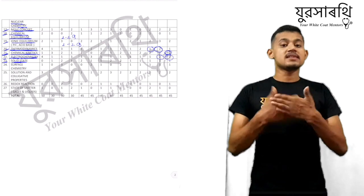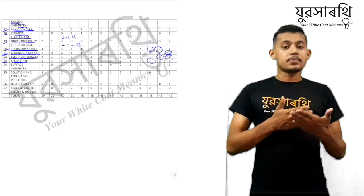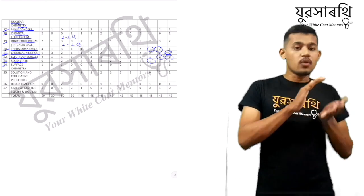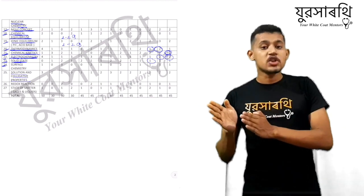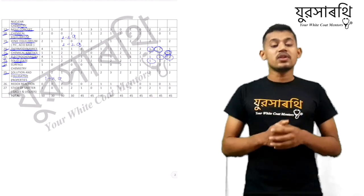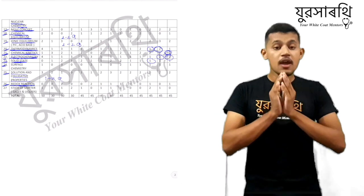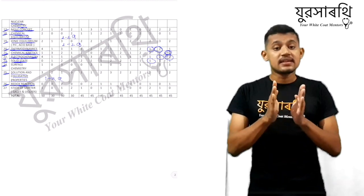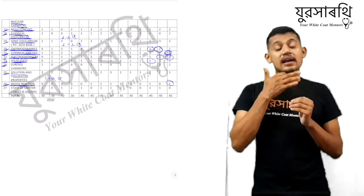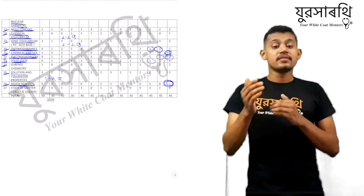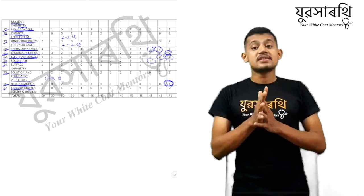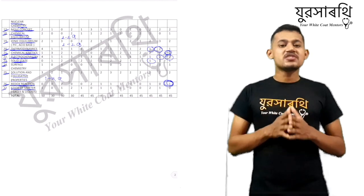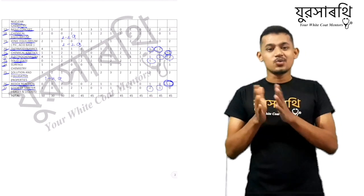After electrochemistry, we have solid state — a class 12 chapter. It's an easy chapter and they ask one to two questions every year. After solid state is the solution chapter — quite theoretical and big, but worth studying as you get one to two questions in the exam. After that we have redox reaction. In redox reaction, you have to memorize the list based on the reducing properties of elements — once you memorize that list, you can solve almost all the questions. They ask one question from redox reaction. Finally, we have states of matter, a class 11 chapter that is basic and easy, and you get one or two questions in the exam.